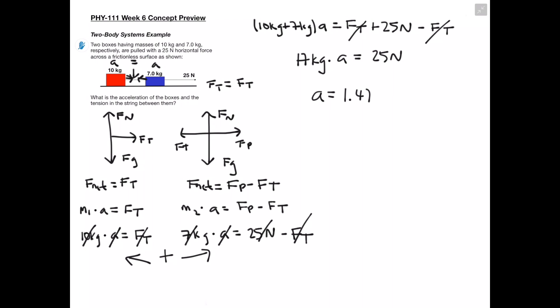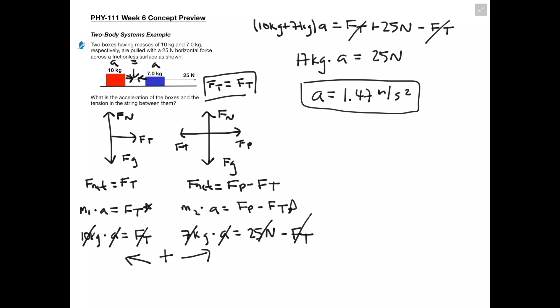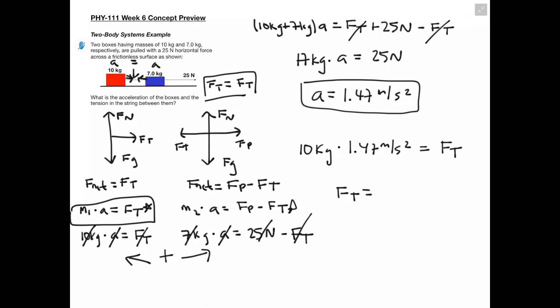When we combine everything together, we get 17 kilograms times acceleration equals 25 newtons, giving us an acceleration of 1.47 meters per second squared. Now we have our acceleration, and the other thing we're asked for is the tension force in the rope. Since both tension forces are the same, we can choose either equation — we'll go with the simpler one. Plugging in 10 kilograms times 1.47 meters per second squared, our tension force ends up being 14.7 newtons.